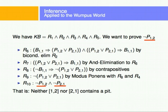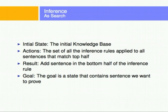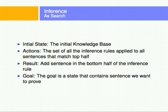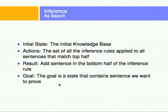However, solving those rules might be rather complicated because I have to have so many rules in memory. We'll look at mechanisms to solve this as search. Initially, we'll have the initial knowledge base with whatever rules we have. The actions are going to be the set of all inference rules applied to sentences that match the top half. The result will be to add a sentence at the bottom half of the inference rule. The goal is the state that contains the sentence we want to prove.